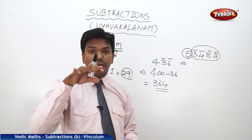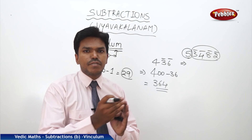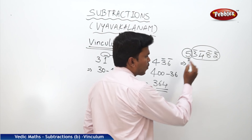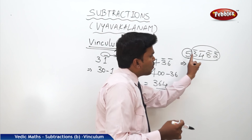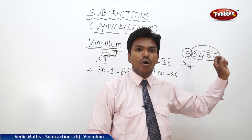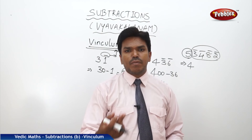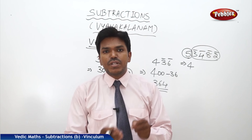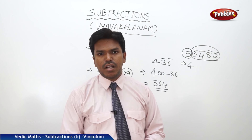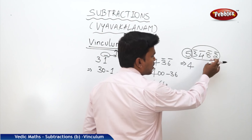To convert the vinculum number into the normal number, you have to reduce the digit before the bar number by 1. The bar number here is 3, 4, 8, 2, and the digit before it is 5. So reduce 5 by 1 — it becomes 4. For the bar digits 3, 4, 8, 2, apply the previous sutra: Nikhilam Navatashcaramam Dashatah — all from 9, last from 10.